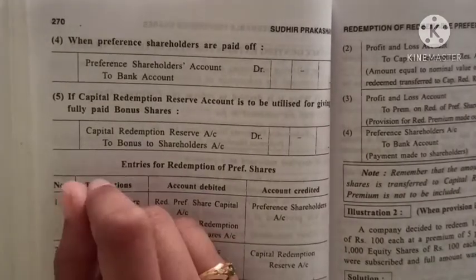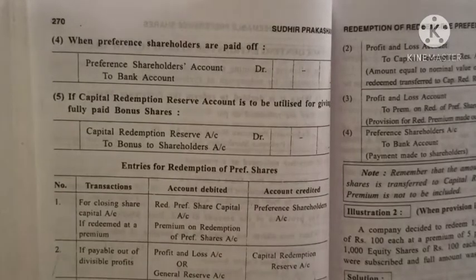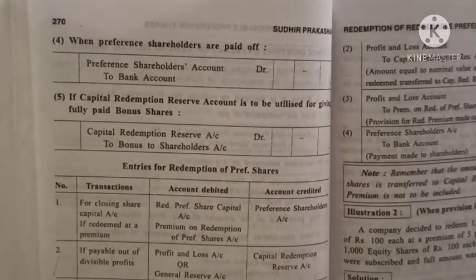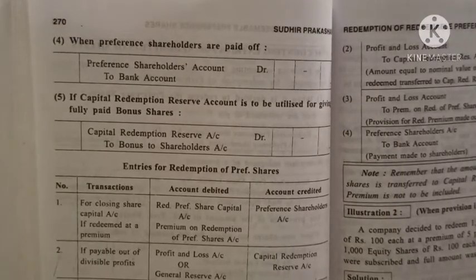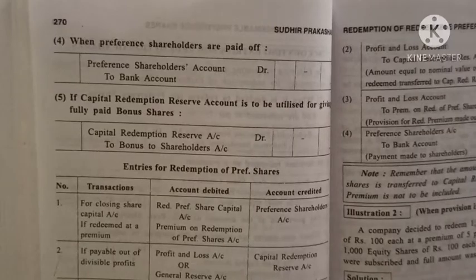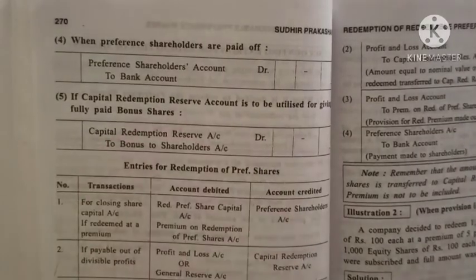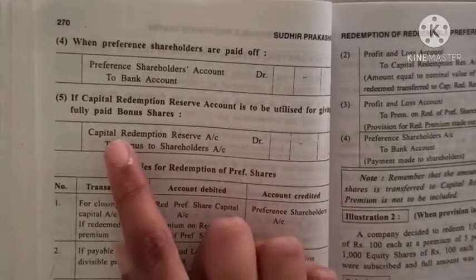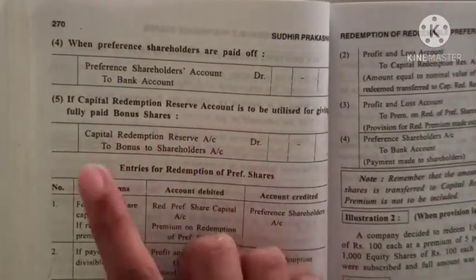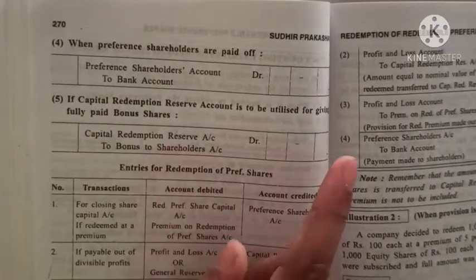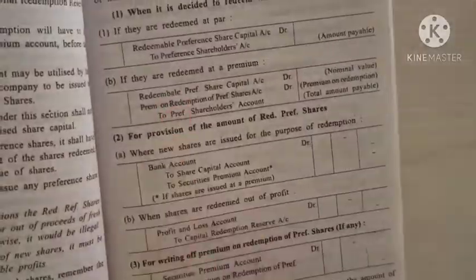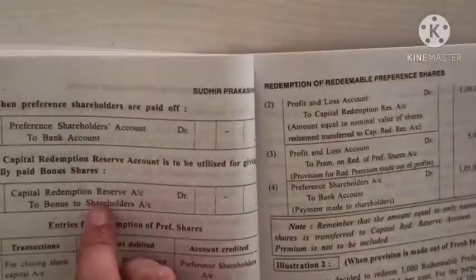Also mentioned here is that the Capital Redemption Reserve account can be utilized for issuing bonus shares — fully paid bonus shares — just as we did in Chapter 5. From that total amount, bonus shares will be issued to shareholders. The journal entry is: Capital Redemption Reserve Account debit, to Bonus to Shareholders Account credit. So these are the five situations for which you have to make general entries.